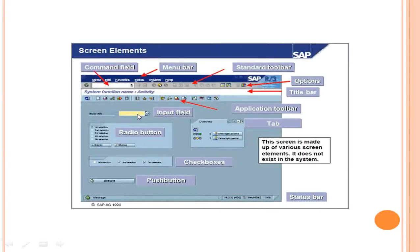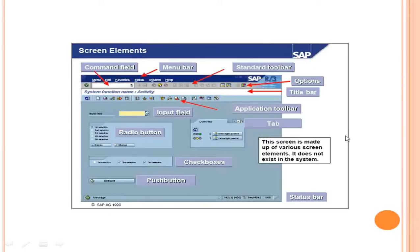We have the title and then the application toolbar that varies from screen to screen. Then we have different types of info input fields. If I have something like that, I click on it and select one of the options given. I have different input fields: one is a radio button so I can select only one of them. I also have a push button and checkboxes where I can check multiple things. These are the different areas.